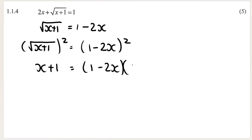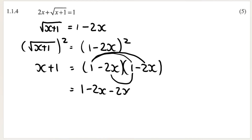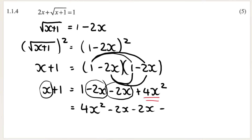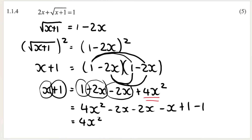If you forget how to do this correctly, write out the bracket twice to see you're doing a binomial squared, then use the FOIL method. So 1 times 1 is 1; 1 multiplied by negative 2x is negative 2x; negative 2x multiplied by negative 2x is positive 4x squared. As soon as I see x squared, I know I'm dealing with a quadratic equation and need to get it into standard form — make it equal to zero.